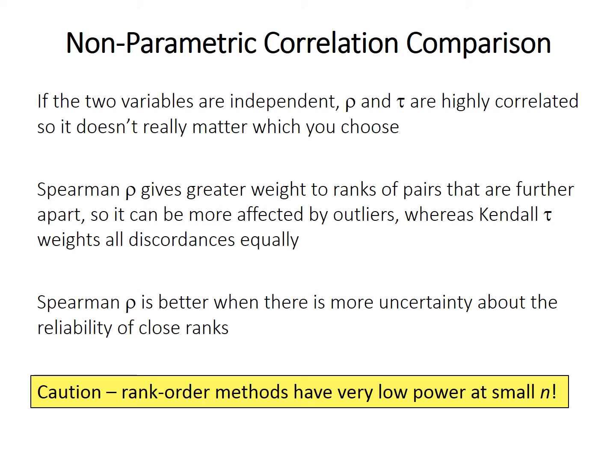As a final note of caution, all of these rank order methods have pretty low power if sample sizes are quite small. With very small sample sizes — like 5 or 6 points — it may be impossible to find a statistically significant result, no matter how strong the correlation is.